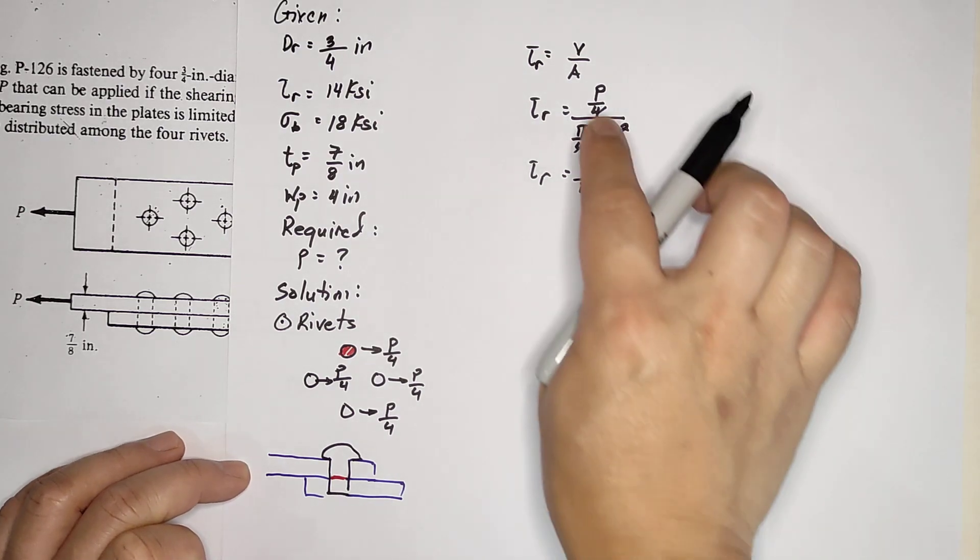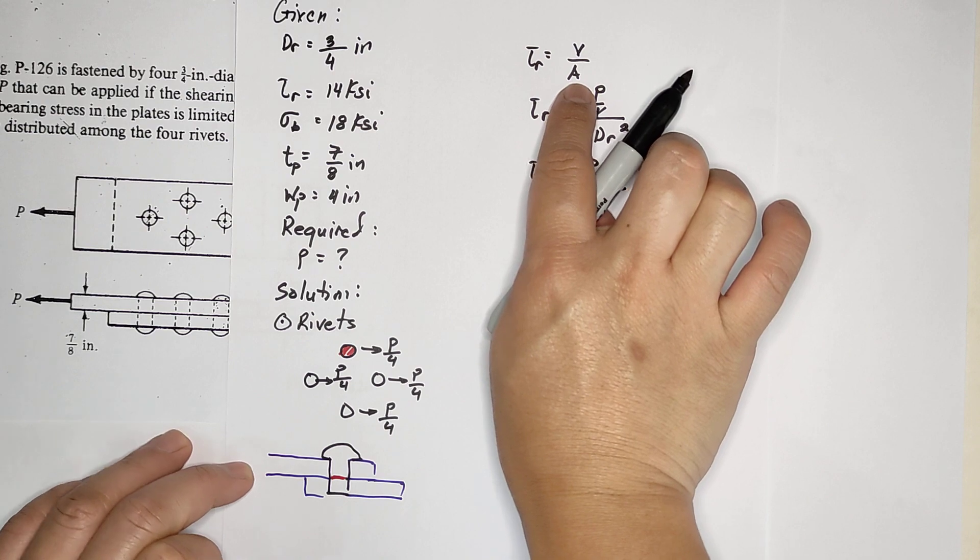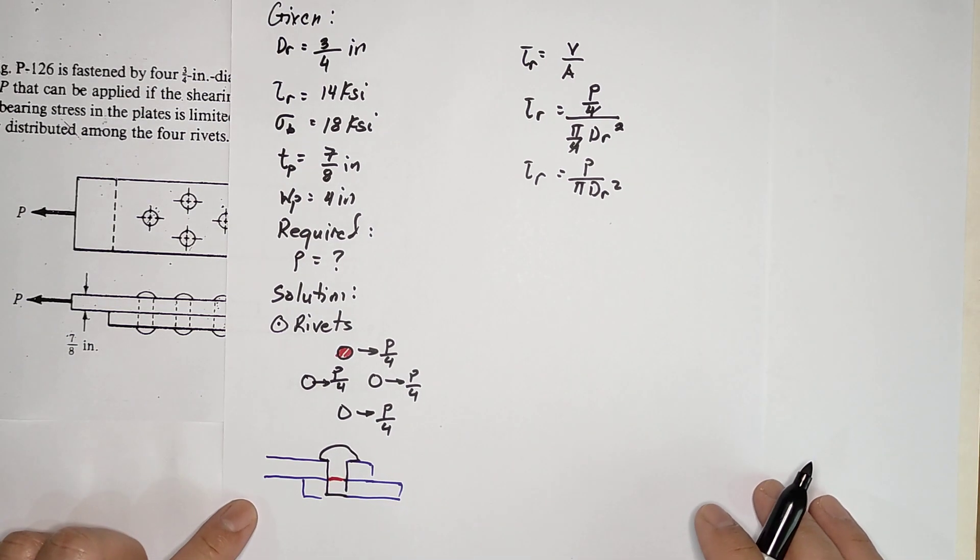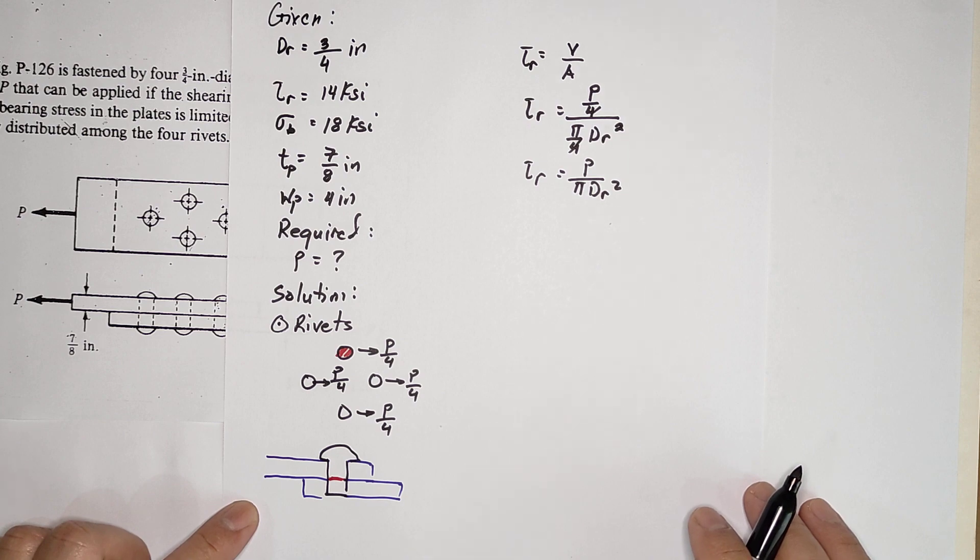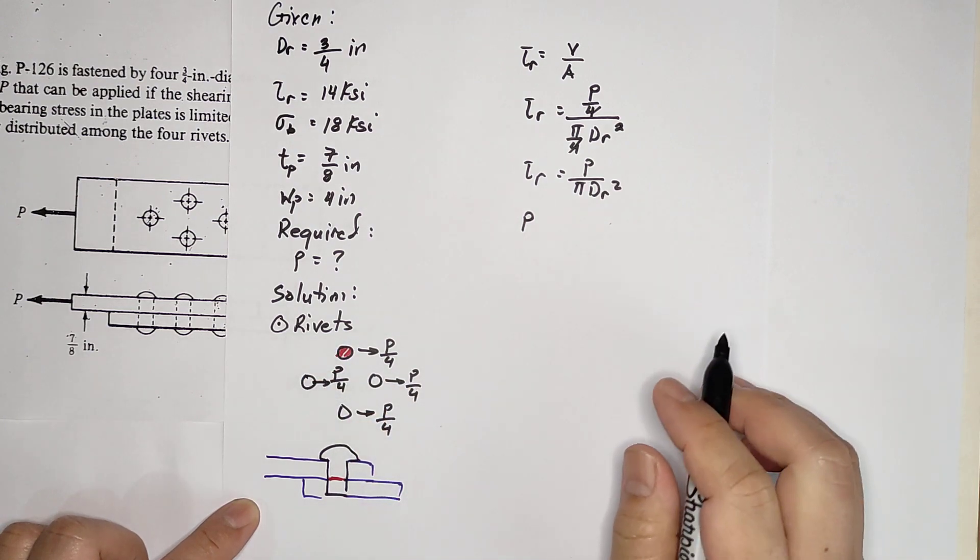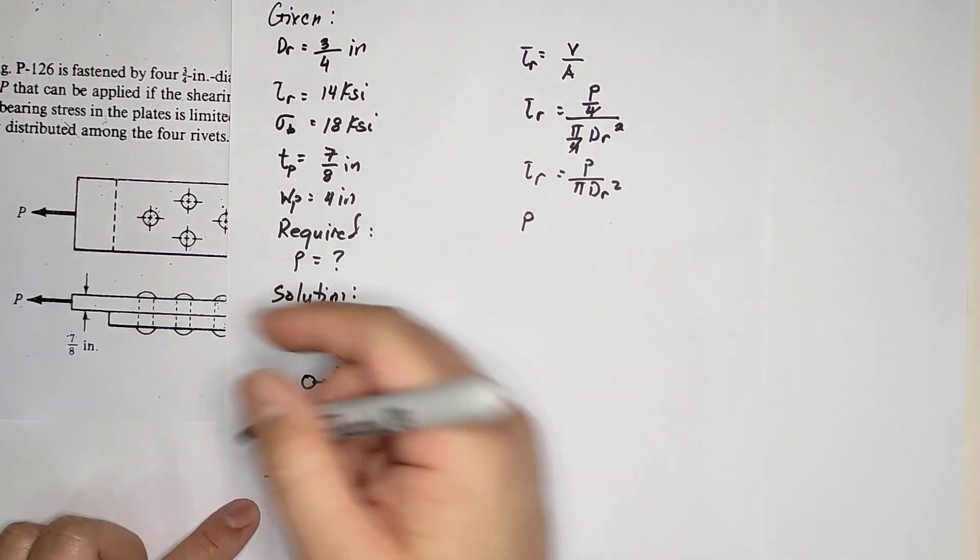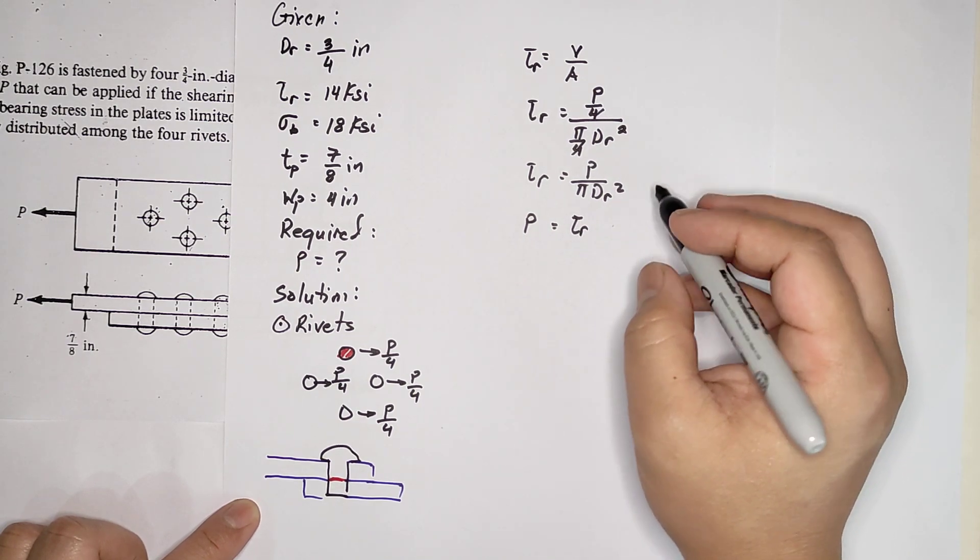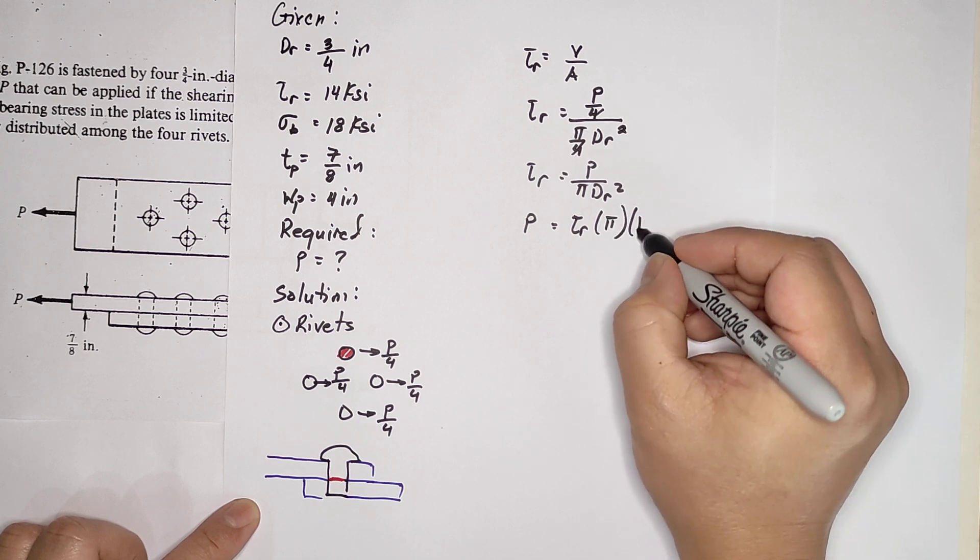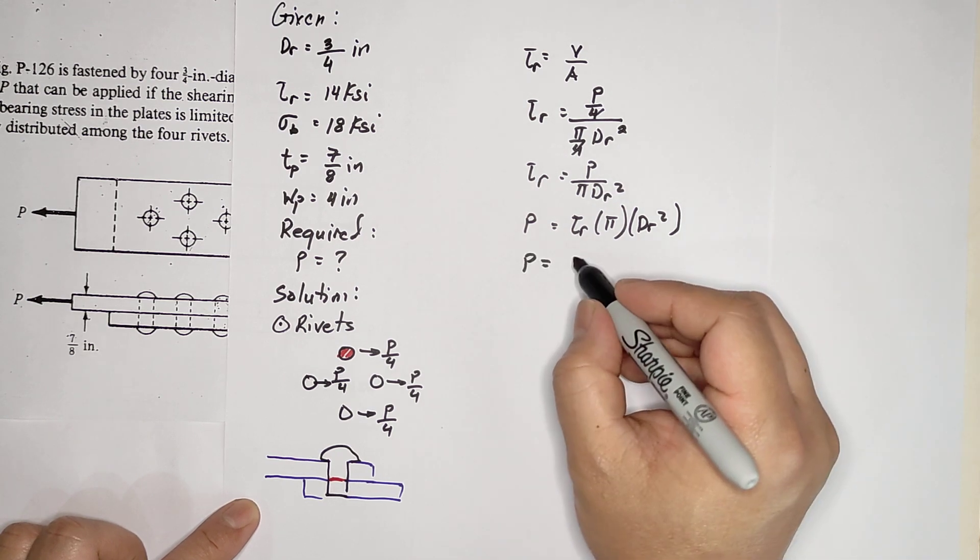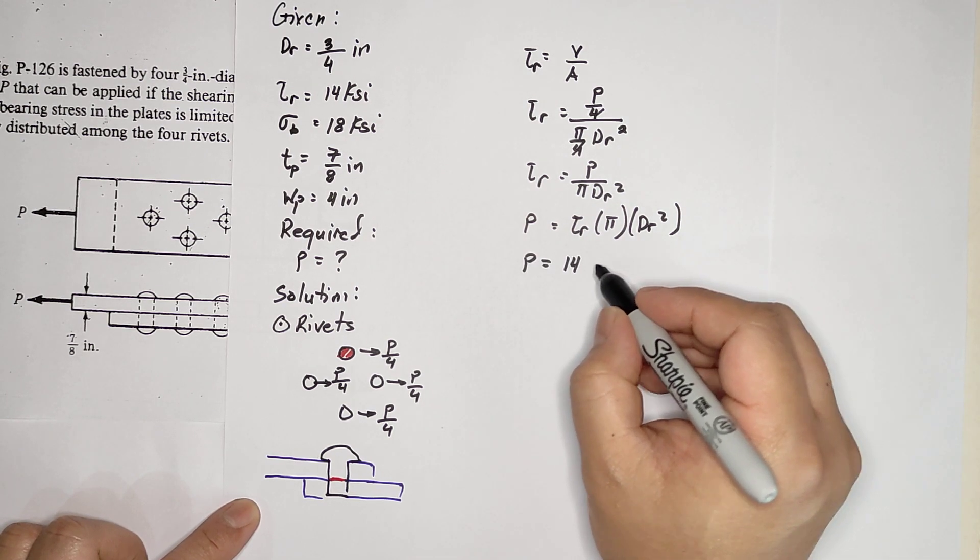You have to take note about the area - remember the area in this case is a circle, not rectangle. You have to understand it and draw it. For P in terms of rivet, that would be τ or shear stress times π times dr squared.